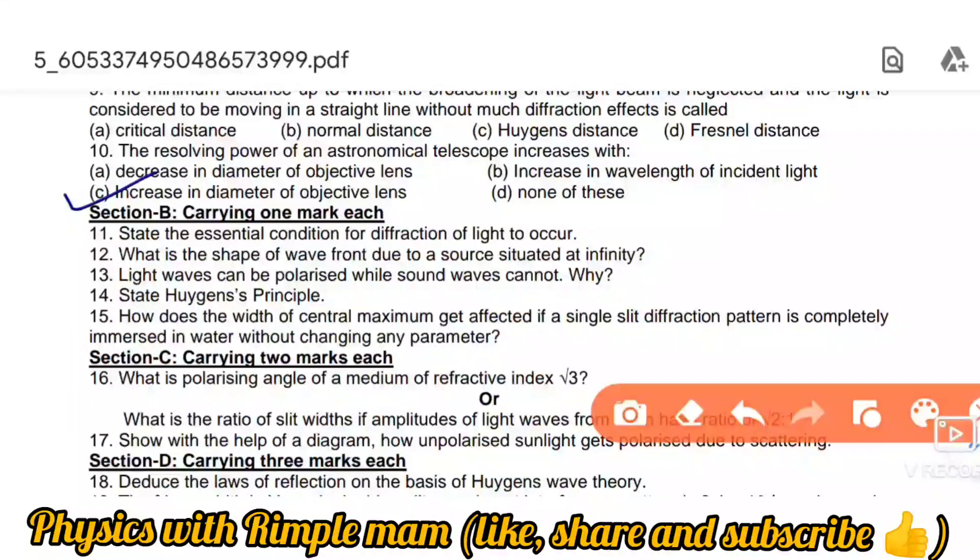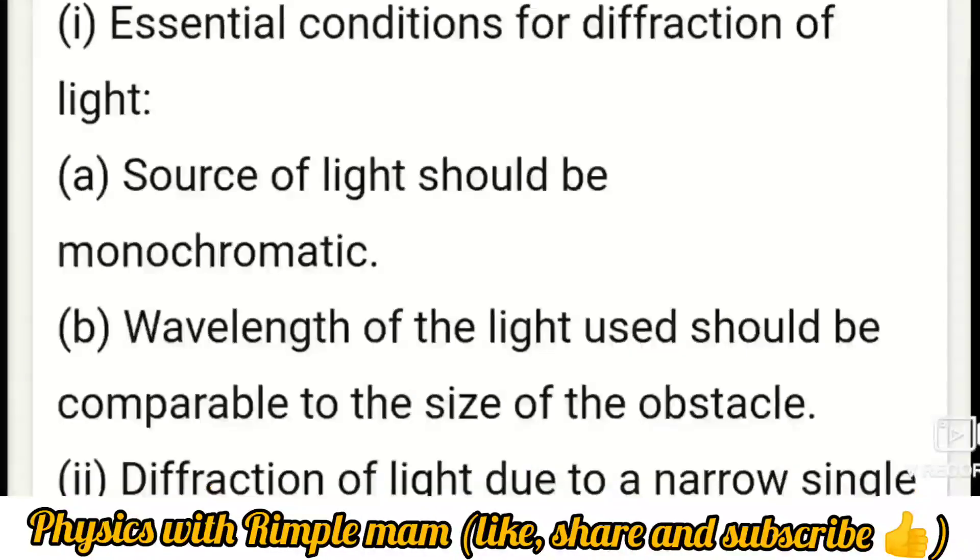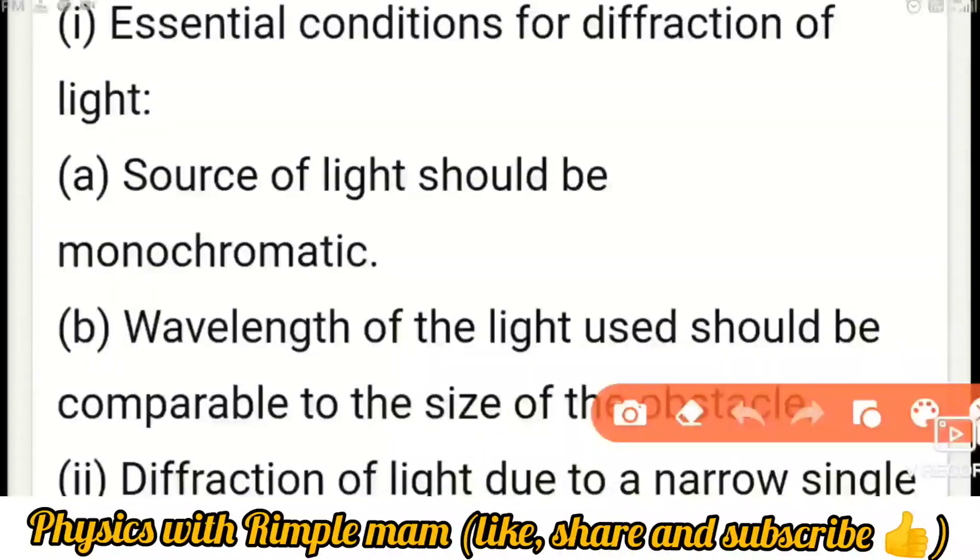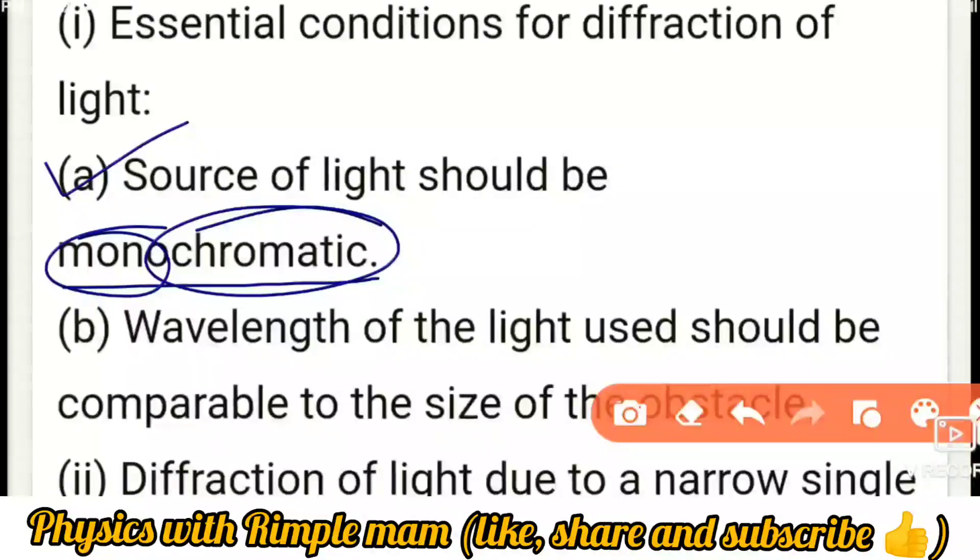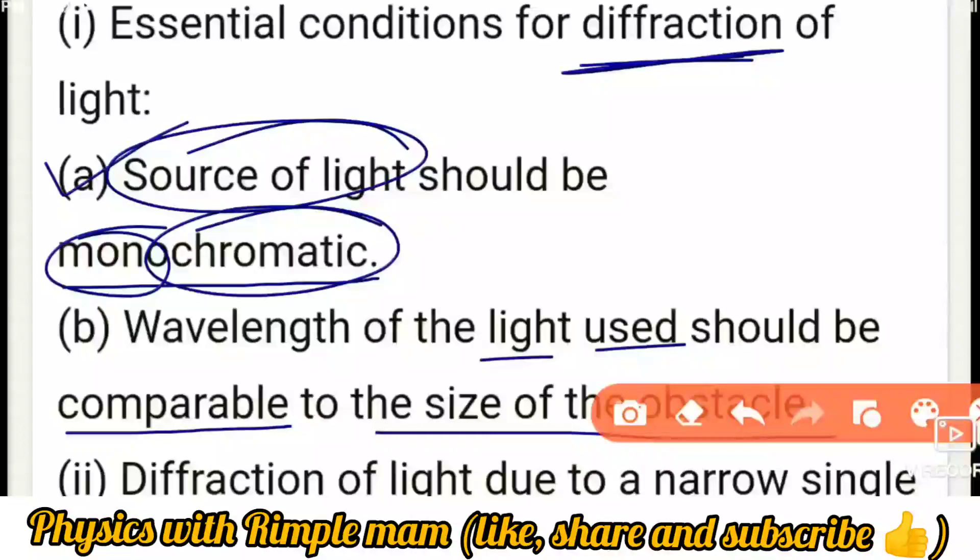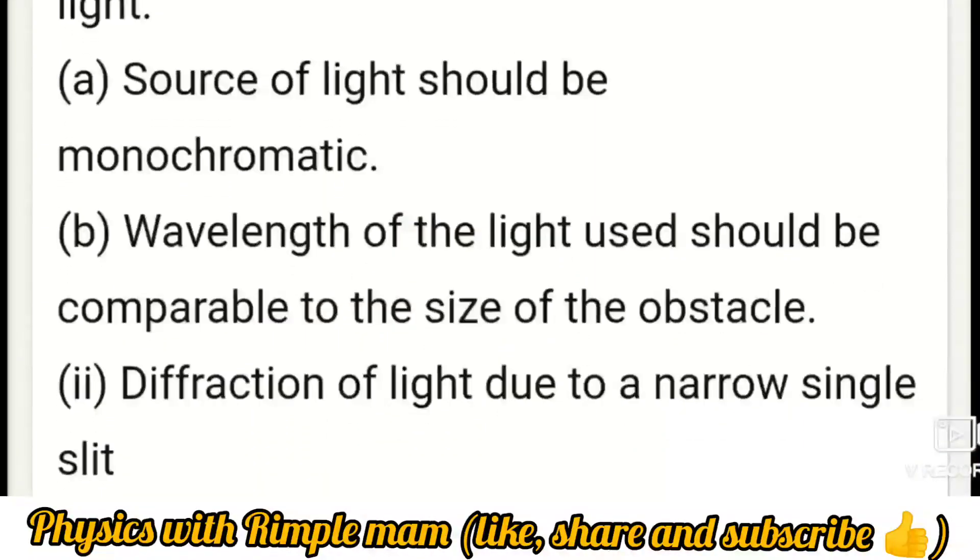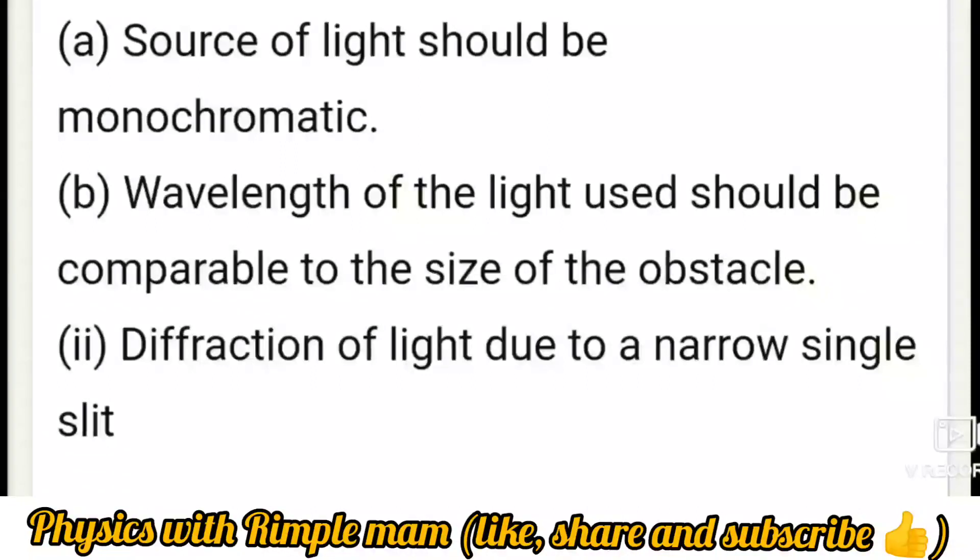Now two marks questions. State the essential conditions for diffraction of light to occur. The main conditions are: Number one, source of light should be monochromatic—mono means single, chromatic means light. Next, wavelength of light used should be comparable to the size of obstacle. Number three, diffraction of light should occur through a narrow slit—the slit should not be too broad, it should be narrow. These are the three conditions.